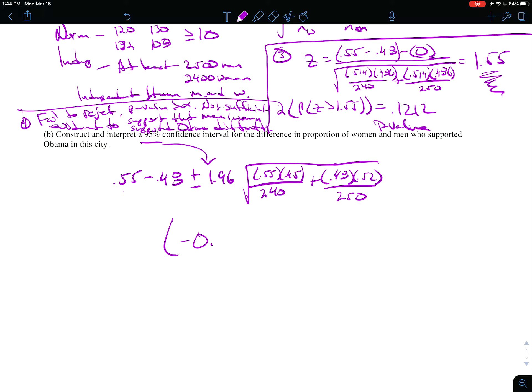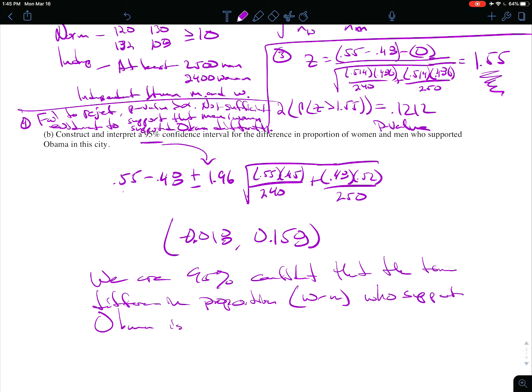So we work all that out and we get negative 0.018 to 0.158. Let's see, I subtracted the larger minus the smaller, so I'm going to get negative 0.018 to 0.158. I think I got that right. We are 95% confident that the true difference in proportion who support Obama is between negative 0.018 and 0.158 percent in this city.